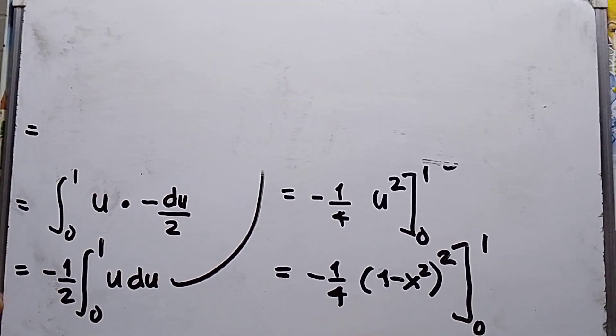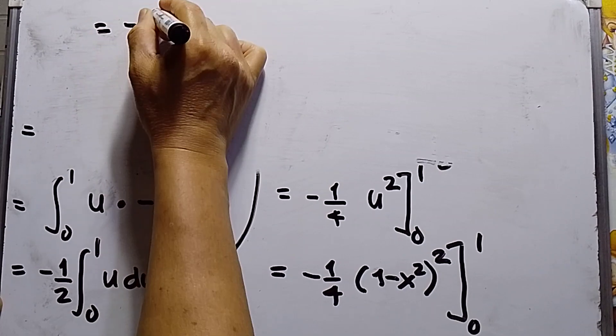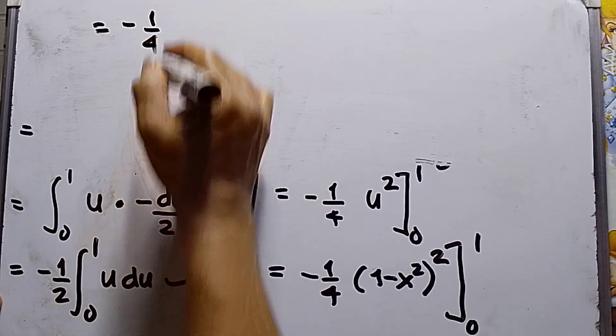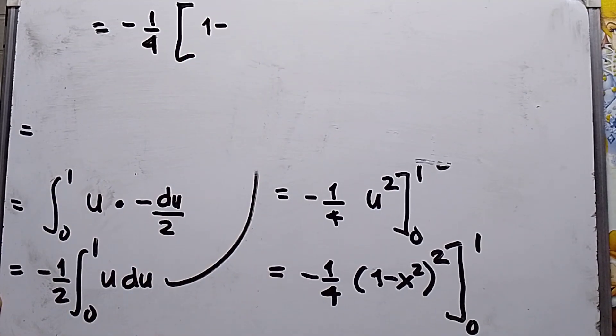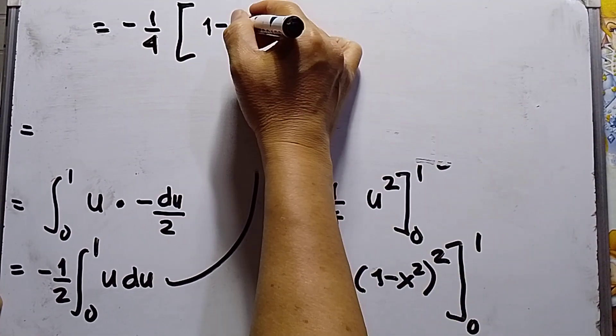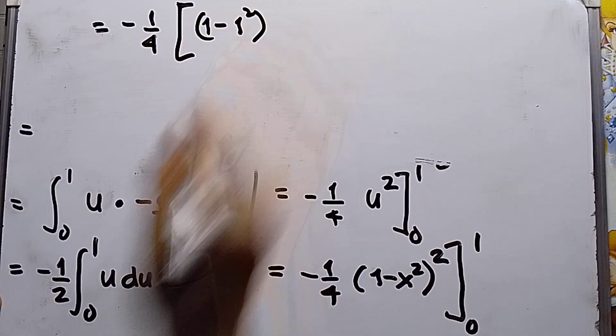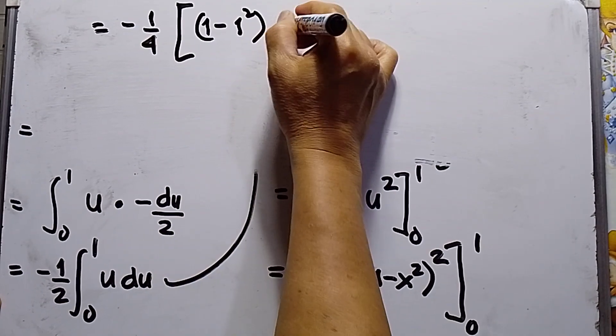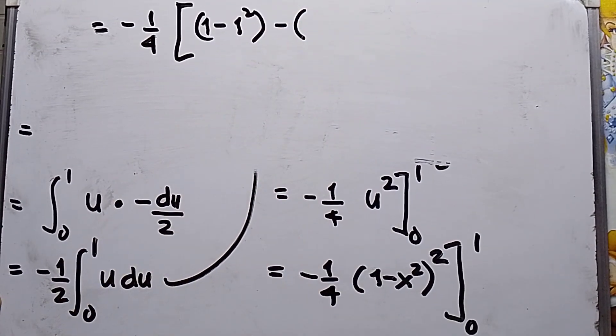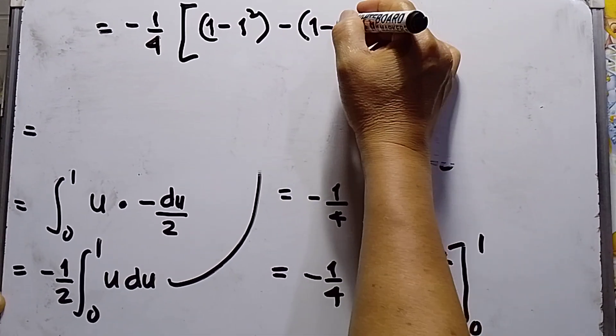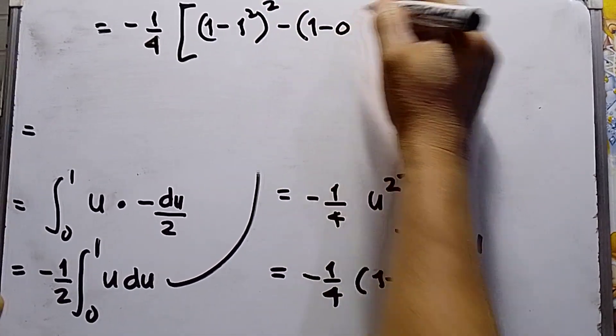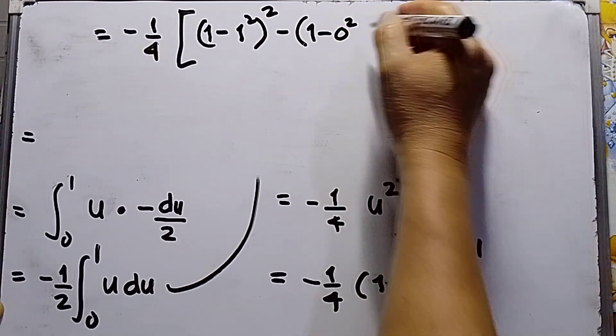Negative 1 over 4, then this will be 1 minus 1 squared, 1 squared, then minus 1 minus 0, this will be squared, 0 squared, squared.